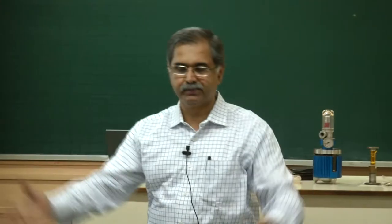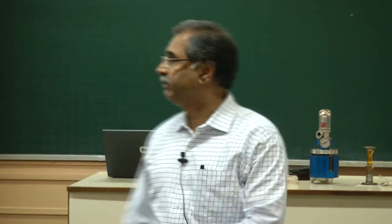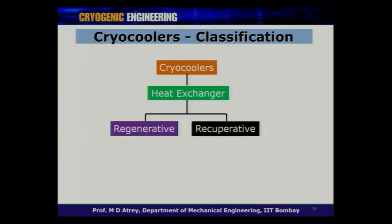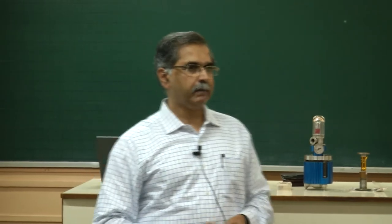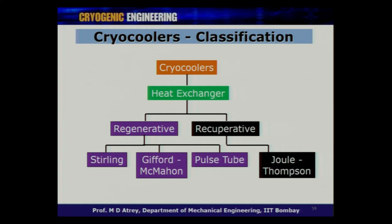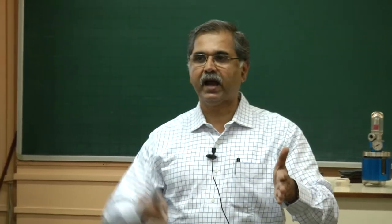This cryocooler classification is based on the kind of heat exchanger used. There are two broad categories: recuperative heat exchangers and regenerative heat exchangers. Everything studied so far has been recuperative heat exchangers. Most cryocoolers use regenerative heat exchangers. What is the difference between the two?